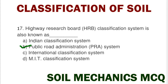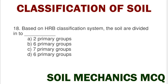Next question: based on HRB classification system, the soil is divided into option A two primary groups, option B six primary groups, option C seven primary groups, option D six primary groups. The correct answer is option C seven primary groups.